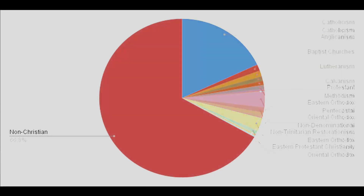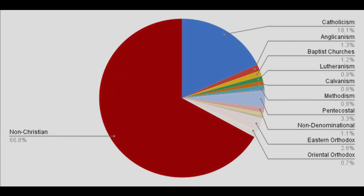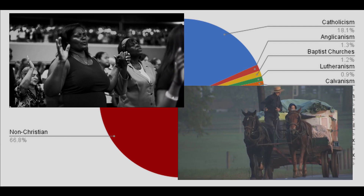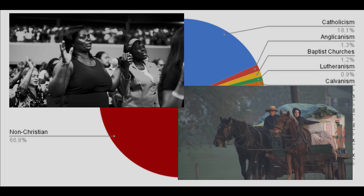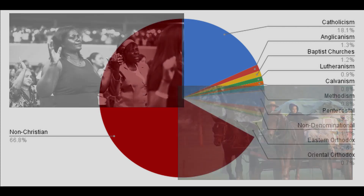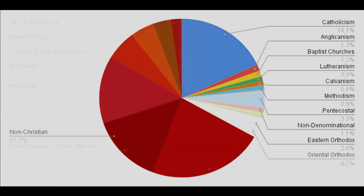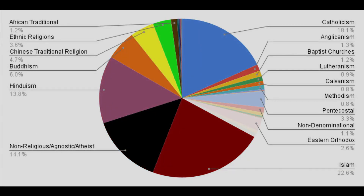Of course, Protestantism can be broken down into subcategories which are quite distinct. Southern Baptists and the Amish both reflect Protestantism, but it is unlikely the two groups would identify as the same religion. And the non-Christian category includes Islam, Buddhism, Confucianism, Hinduism, Judaism, and many many others.